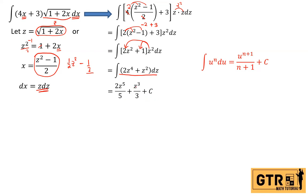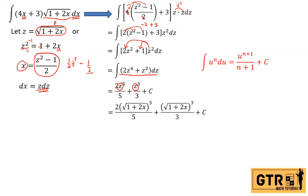We bring the answer back in terms of x, since the original integral was in terms of x. The value of z is square root of (1 + 2x), so we substitute: 2(√(1+2x))⁵/5 + (√(1+2x))³/3.